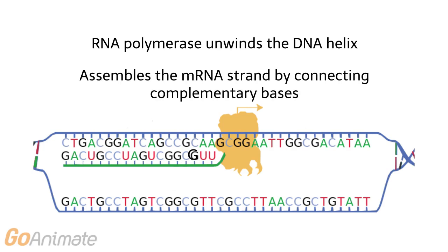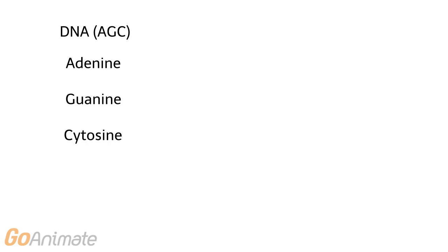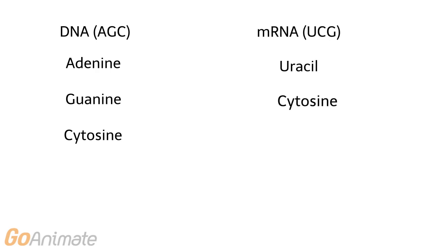mRNA is assembled by connecting complementary bases to DNA. For example, the three-base sequence AGC — adenine-guanine-cytosine — will result in the complementary sequence UCG, uracil-cytosine-guanine, on the mRNA molecule.